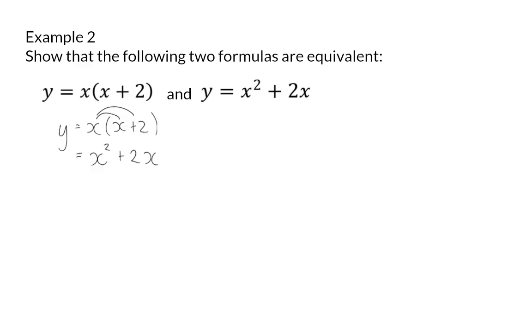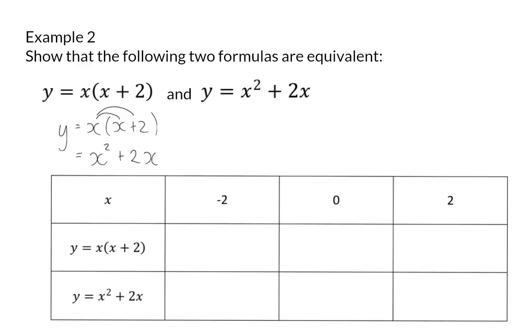Or, you can use input and output values again. Here I have a table, and I have chosen three input values. So, when I start off substituting, I am going to start substituting minus 2 into my first equation, to get minus 2 times minus 2 plus 2, and this will give me 0. When I substitute 0 into the first function, I will also get 0. And when I substitute 2 into the same function, the output value is 8.